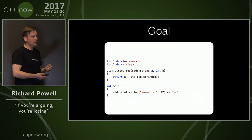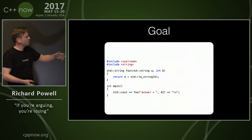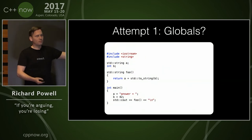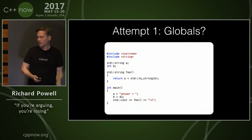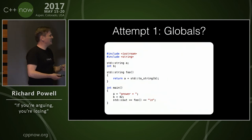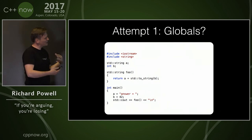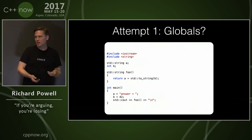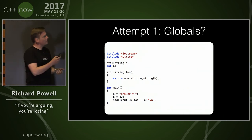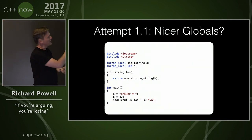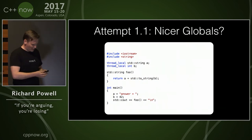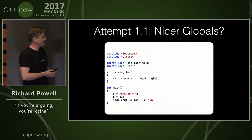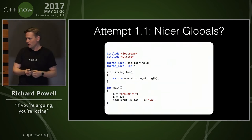The first one is obvious: globals. I'm just going to put data off to the side. My function gets called and it reads globals. Except that's not so satisfactory — it's not very multi-threaded safe, so I'll fix it with some nicer globals. So there we go: no arguments. I'm not losing.